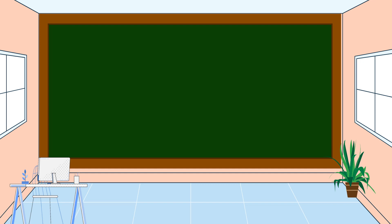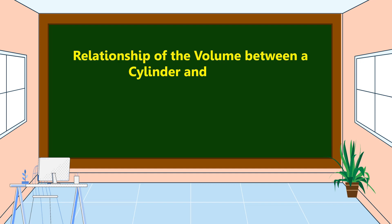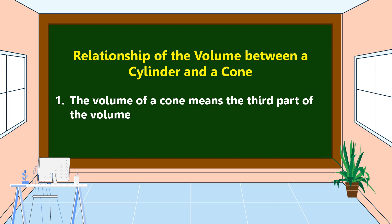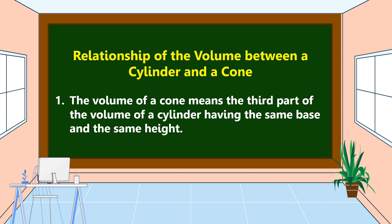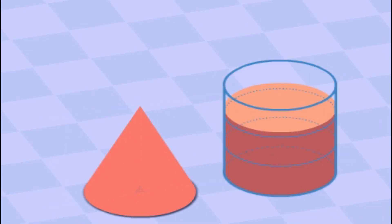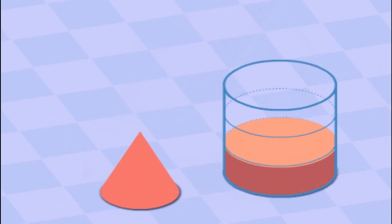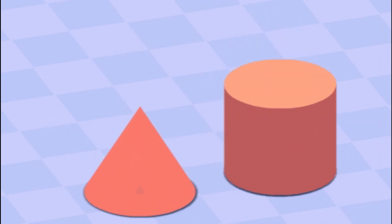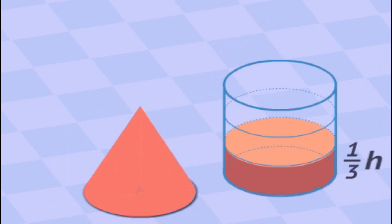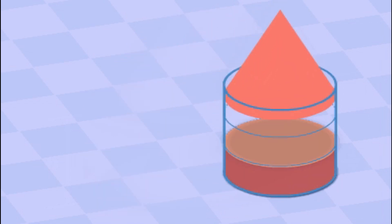Next, we're going to discuss the relationship of the volume between a cylinder and a cone. The volume of a cone is one-third the volume of a cylinder having the same base and the same height. As you can see, there are three cones that can fit into one cylinder, which means the volume of a cone is one-third the volume of a cylinder.